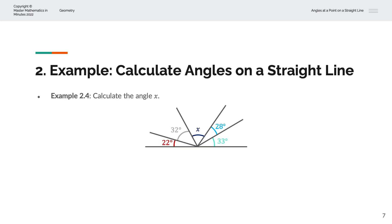In the fourth example, we're asked to calculate the angle x. Again, we have angles on a straight line which sum to 180 degrees. So x is equal to 180 minus 22 minus 32 minus 28 minus 24 minus 33, which simplifies to x equals 65 degrees.